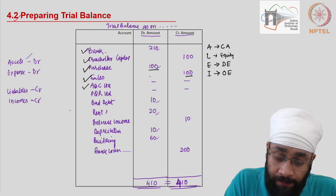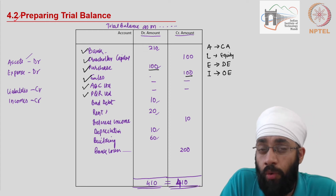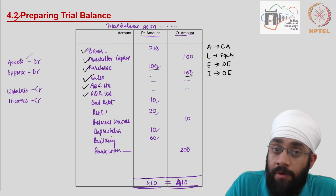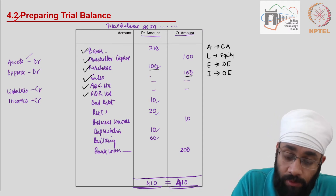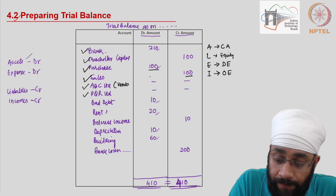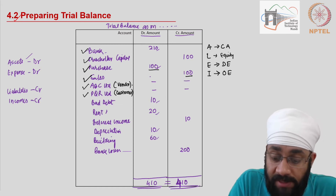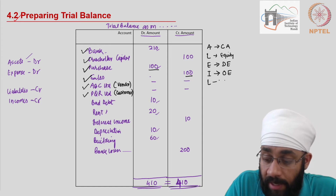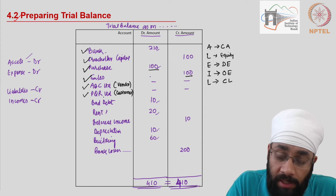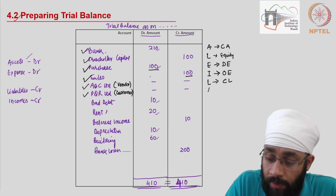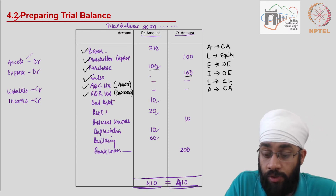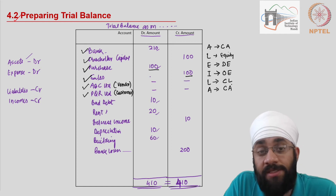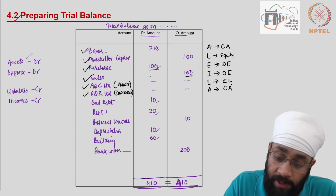Then we have ABC and PQR - there is no balance in these accounts, but if there were, ABC is the vendor and PQR is the customer. A vendor balance would represent a current liability, while a customer's account is an asset and a current asset. If there were any balances in these accounts, we would post them in their respective places.